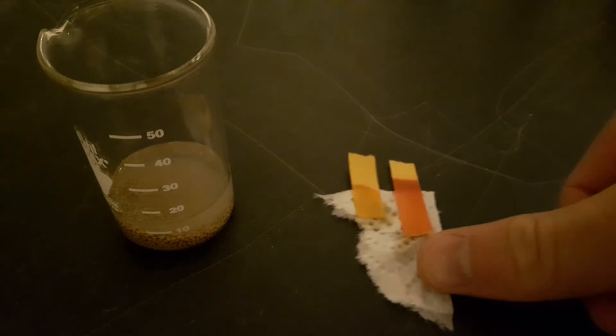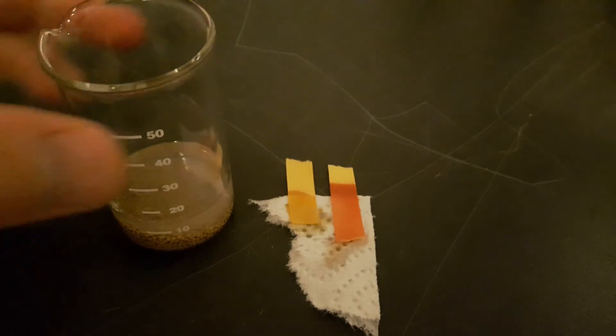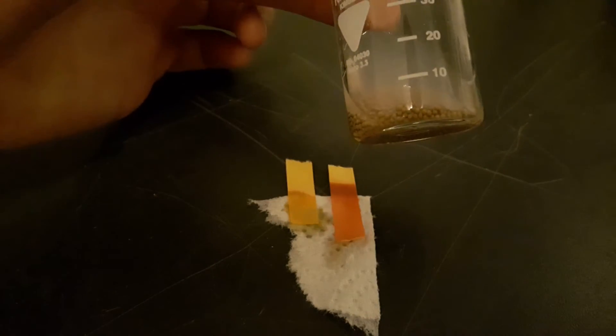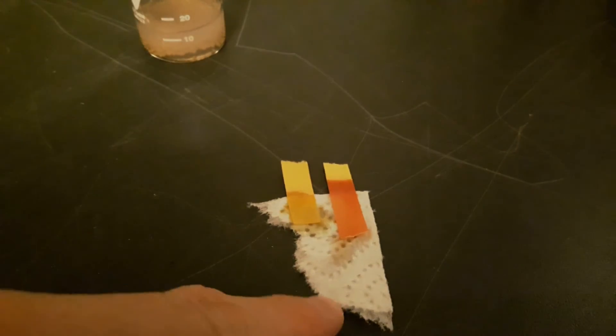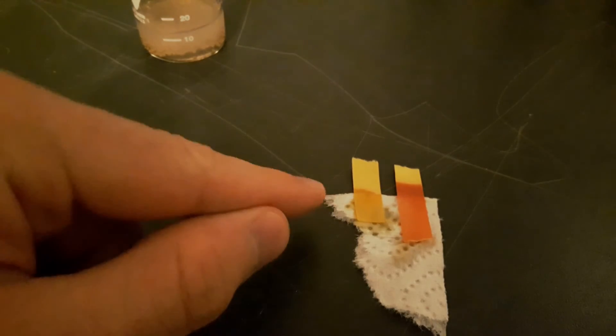And now I take the pH of my acid molecular sieves mix, and you see it's actually a lighter red. So, the pH increased, which means there are less H+ ions.